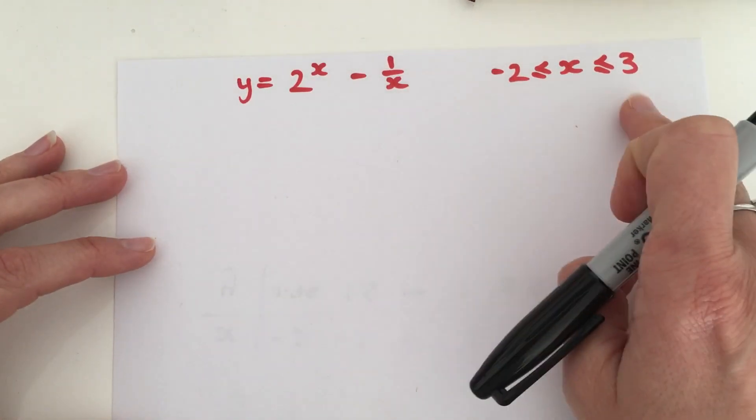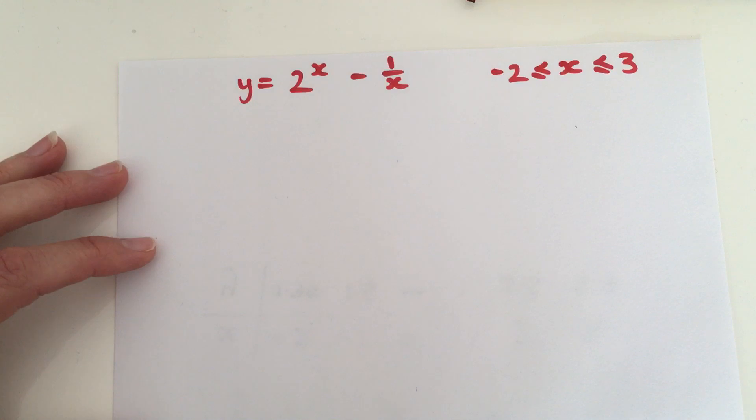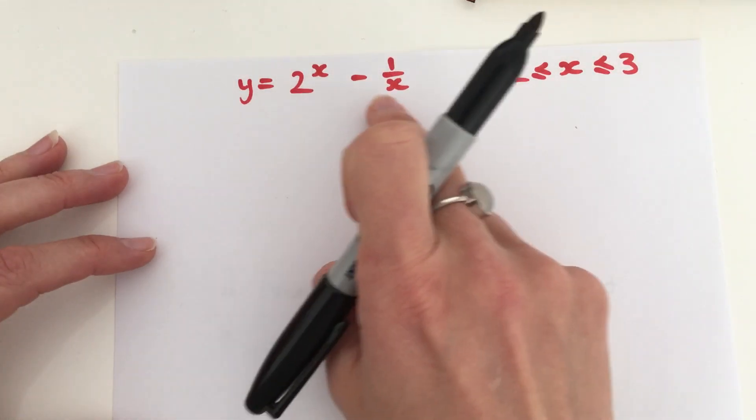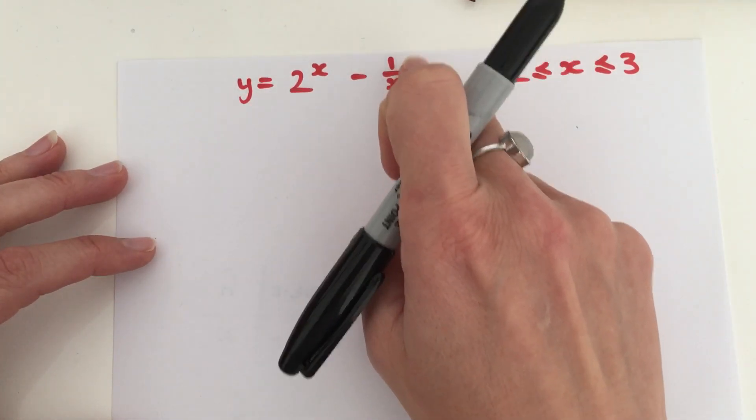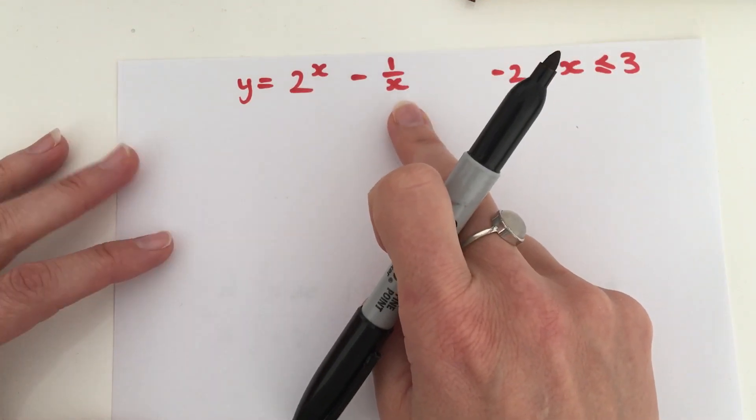In this case, it's taking values between minus 2 and 3, including minus 2 and 3. And then we're subtracting from that 1 over x, and we call this a reciprocal graph.